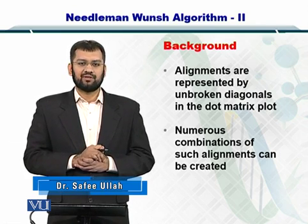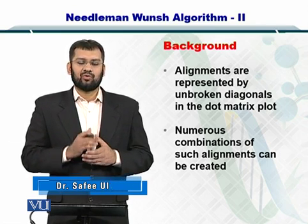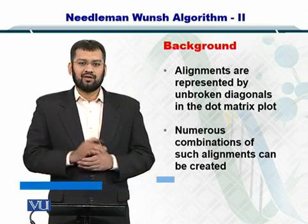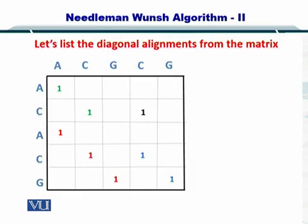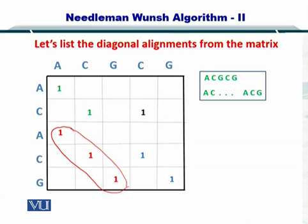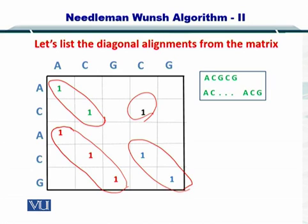To better phrase the question and help you understand what we are going to do later, I will give you this example. So this is what we were studying previously and we already saw that these are the diagonals that represent the alignment. And here was an example which did not have a diagonal. So if you want to consider diagonals only, then this match between the C will be ignored.